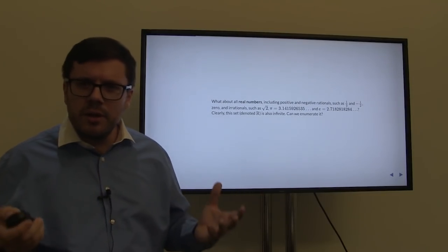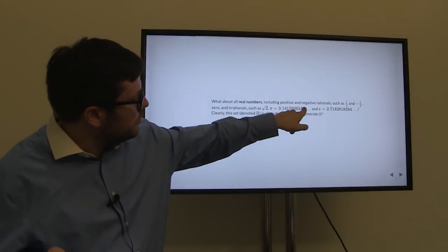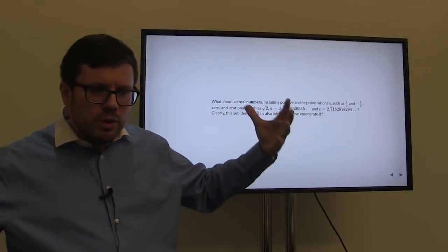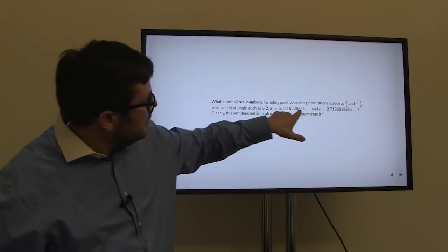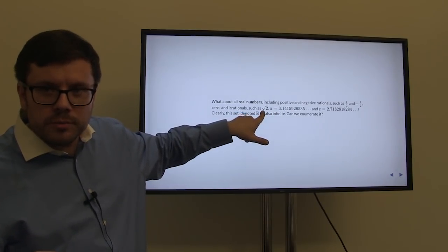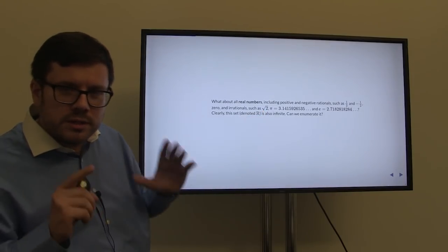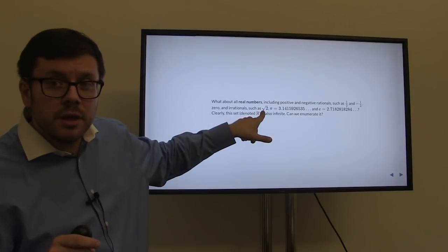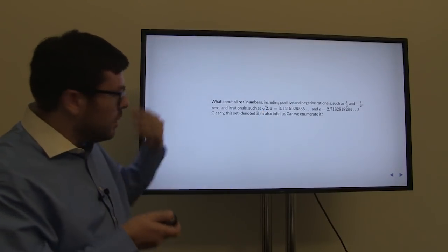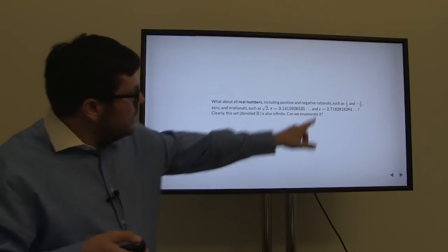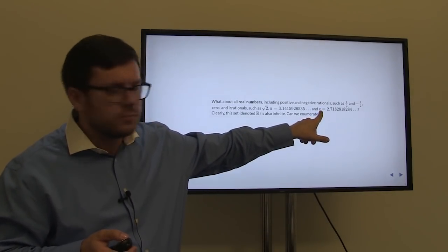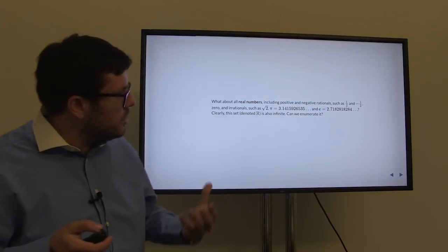We know that not every single number can be written as a fraction. Pi, for example, is a decimal fraction with an infinite decimal expansion — we can never exhaust the decimal expansion of pi, and we cannot write it as p over q. Nor can we write root 2 as p over q. These numbers are known as irrational. Another irrational number is the well-known number e, approximately 2.71 and so on.